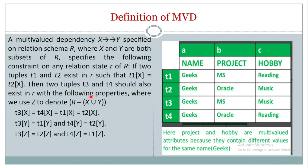The formal definition of multi-value dependency: X multi-determines Y specified on relation schema R, where X, Y, Z are subsets of R. Consider A as X, B as Y, and C as Z. We have tuples t1, t2, t3, and t4. As per the definition, t1[X] = t2[X] = t3[X] = t4[X]. As you can see, the first column X — 'geeks' — is the same across all four tuples.